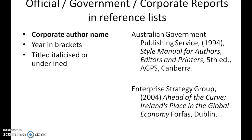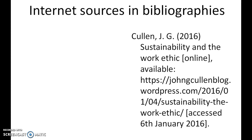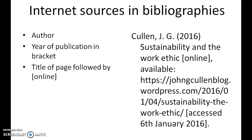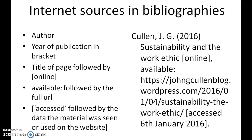For official or government corporate reports in a reference list: the corporate author name — the institution — year in brackets, title italicized or underlined, publisher (which may be the same as the corporate author), and place of publication. For internet sources, you need: author, year of publication in brackets, title of the page followed by '[online]', then 'Available:' followed by the full URL, then 'Accessed' followed by the date you viewed the material.